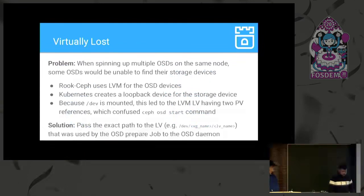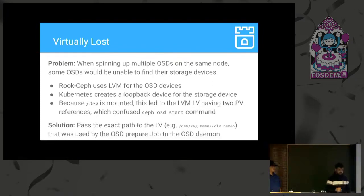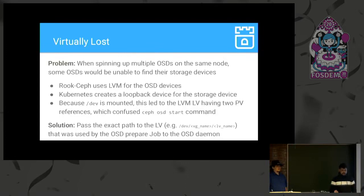The next issue was spinning up multiple OSDs on the same node. We had /dev mounted on top of the container, and the block device was presented to the pod as a loopback device. LVM was picking up the device from /dev as well as the loopback device and getting confused. The Ceph OSD start command was the main thing getting confused. The solution: use the complete name of the LV — that is, /dev, then the name of the VG, then the name of the LV.